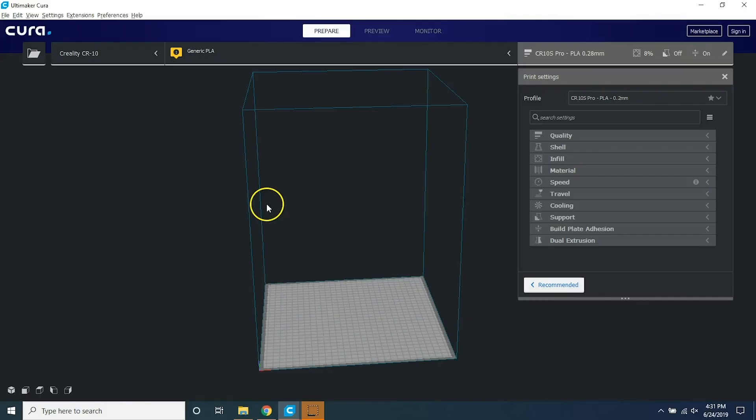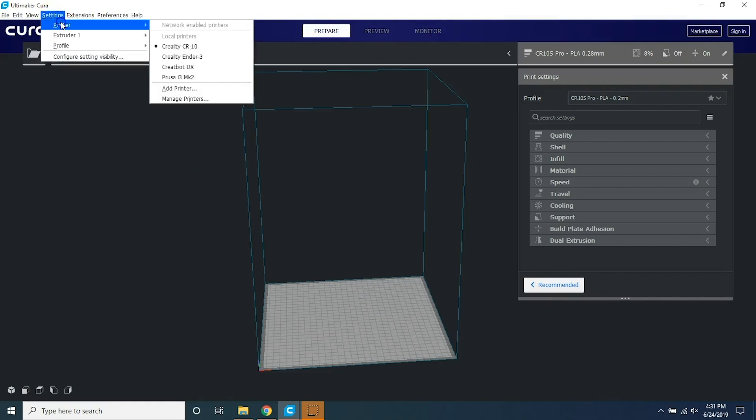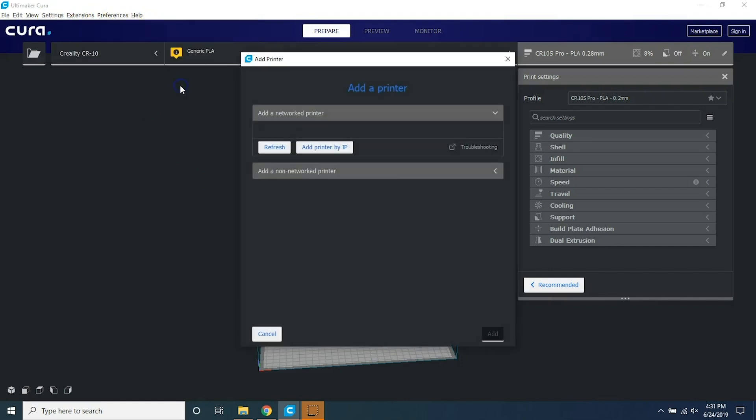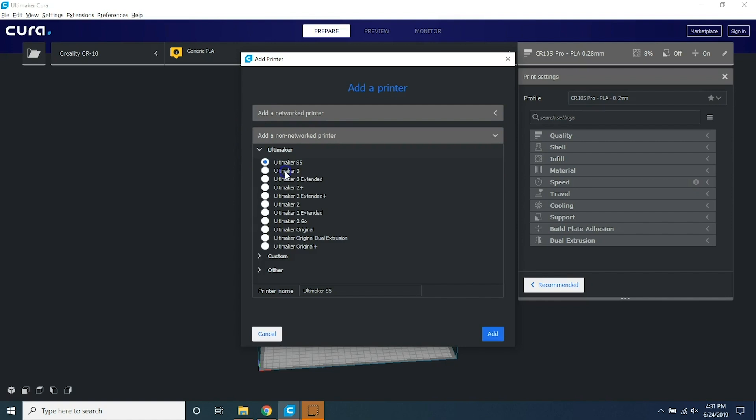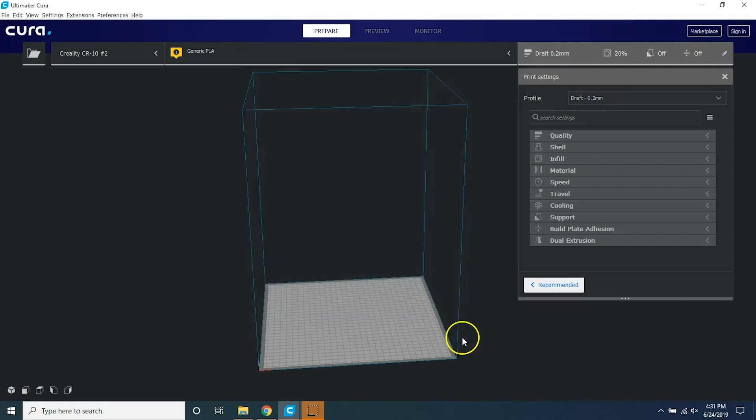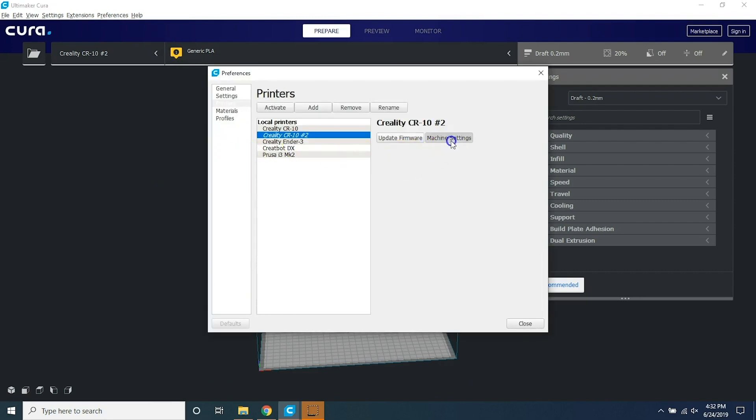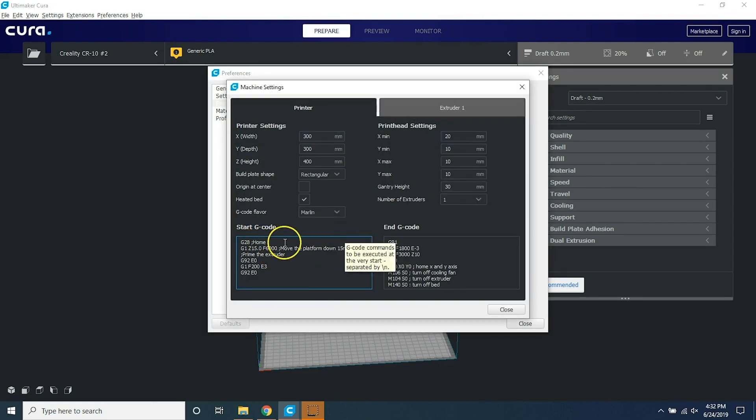To use your CR-10S Pro with Cura, go Settings, Printer, and then go Add Printer. Under Add a Non-Networked Printer, go to Other, and then scroll down to where it says CR-10, and select that. Add that profile. To make this profile compatible with the CR-10S Pro, go to Manage Printers, Machine Settings, and then under the line that says G28, insert a G29 line. This is for auto bed leveling.